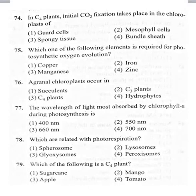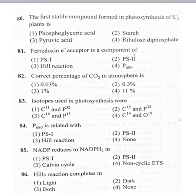80th bit: the first stable compound formed in photosynthesis of C3 plants is — option 1 phosphoglyceric acid, option 2 starch, option 3 pyruvic acid, option 4 ribulose diphosphate. The first stable product formed in C3 plants is phosphoglyceric acid, which contains 3 carbons; hence the cycle is called the C3 cycle. Correct option is 1, phosphoglyceric acid.